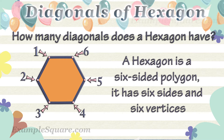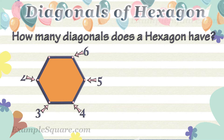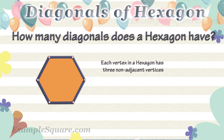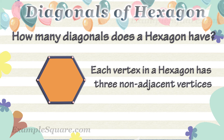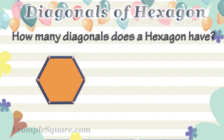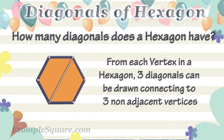Each vertex in a hexagon has three non-adjacent vertices. From each vertex of a hexagon, three diagonals can be drawn connecting to those three non-adjacent vertices.